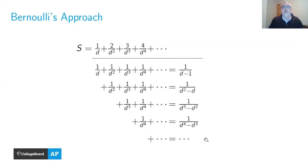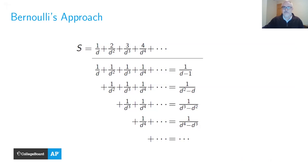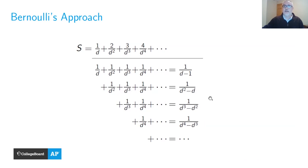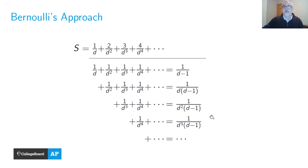Using the geometric series formula and then simplifying, each of those horizontal geometric sums equals a closed expression. After factoring, the denominators simplify: d²−d is the same as d(d−1), d³−d² is the same as d²(d−1), and so on. So each row contributes a term of the form 1/(d^k · (d−1)).